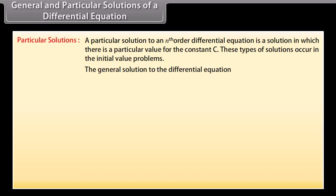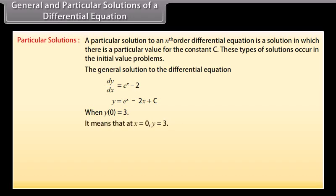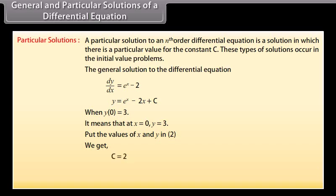The general solution to the differential equation dy/dx = e^x − 2 is y = e^x − 2x + C. When y(0) = 3, it means that at x = 0, y = 3. Putting the values of x and y into equation 2 we get C = 2. So the particular solution to the differential equation is y = e^x − 2x + 2.